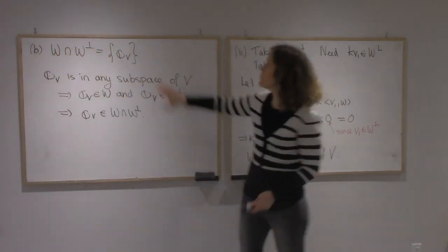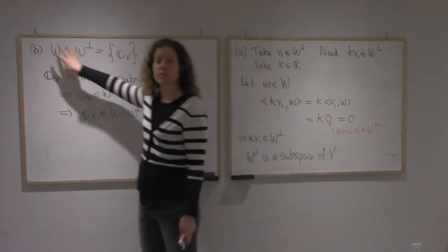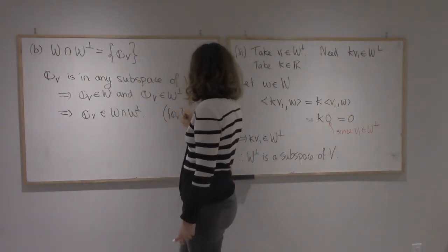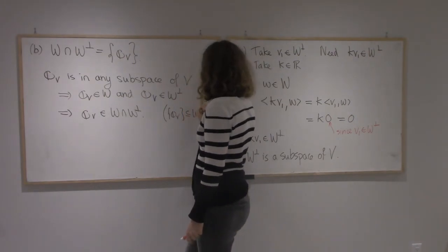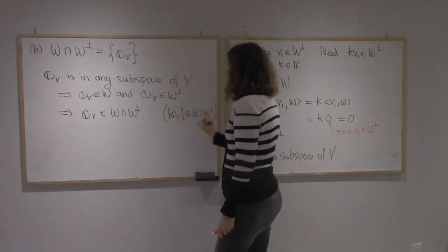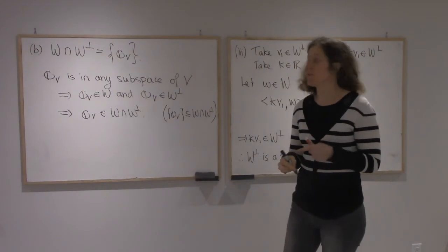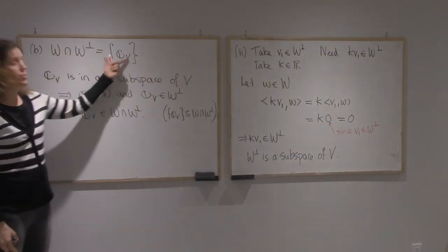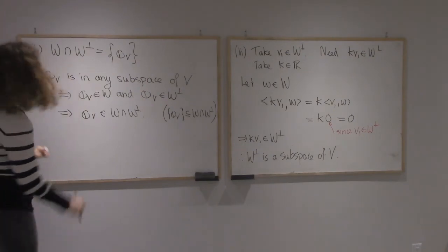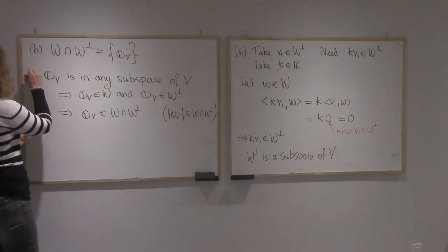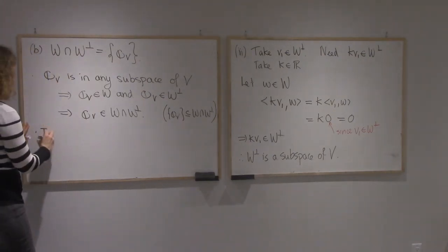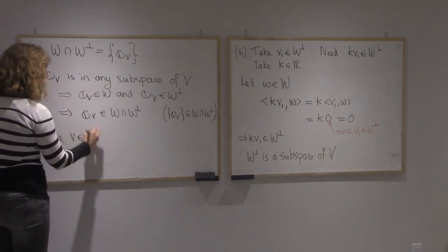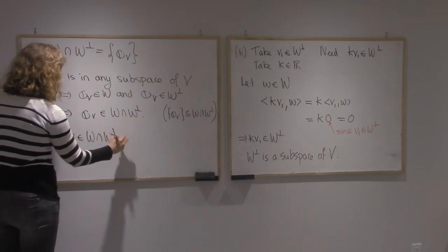Alright, so we proved that this side is included in that side. And now we prove the opposite direction. I'm going to take an element here and prove that it has to be 0. So take v in W-intersection W-perp.